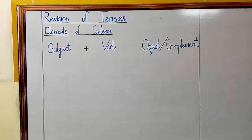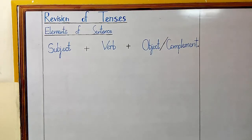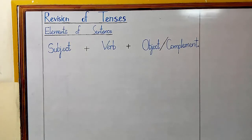Before going through tenses, let us take a look at the elements of a sentence. As you can see on the board in front of you, there are three elements of a sentence: subject, verb, and object or complement. Let's take a look at subject, verb, object, and complement individually — how they work in a sentence.